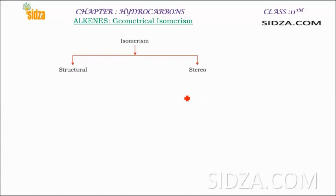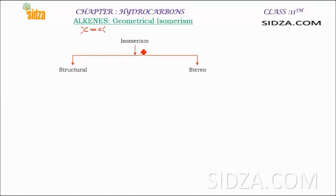Hello friends, welcome to sitza.com. In this video we will learn about geometrical isomerism in alkenes. Alkenes have a carbon-carbon double bond, and around this double bond we can have different arrangements of groups. Due to these different arrangements of groups around the double bond, we get geometrical isomers. But first, let's have an overall look at isomerism.